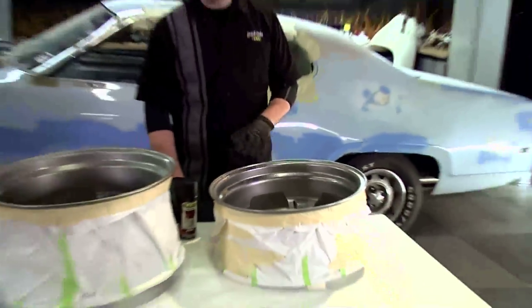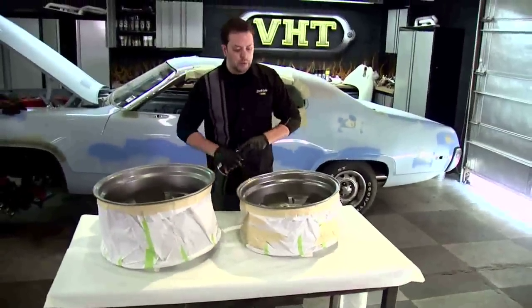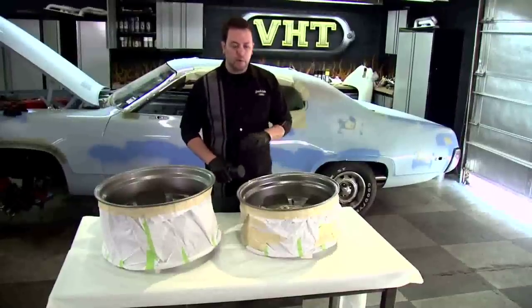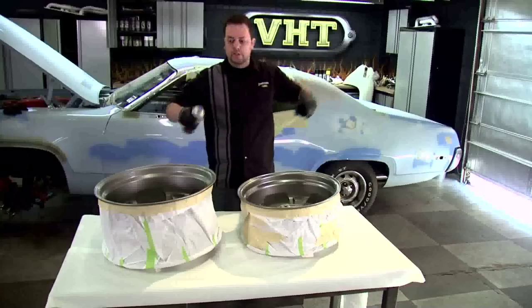We cleaned our wheels with our prep spray. Now we're ready to paint. What we'll do is lay down two light coats followed by one medium coat and we'll wait 10 minutes in between each coat. Let me show you how this is done.